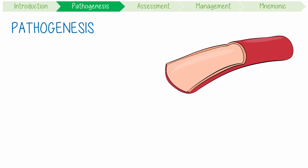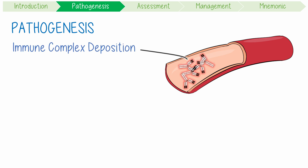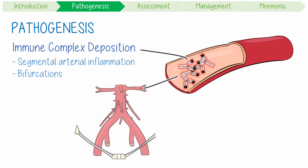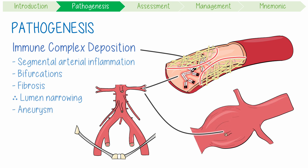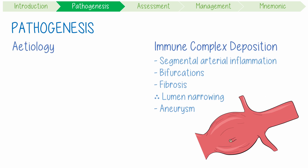We think its pathogenesis involves immune complex deposition, which causes segmental arterial inflammation, especially at bifurcations. This eventually results in fibrosis, causing arterial lumen narrowing, compromising the tissue it supplies. Characteristically, this process results in aneurysmal dilation of 1cm in size.